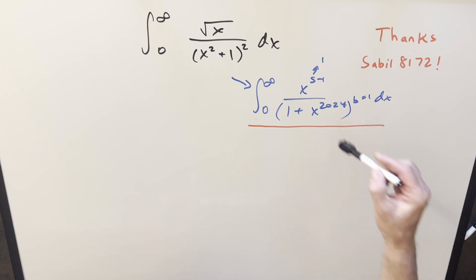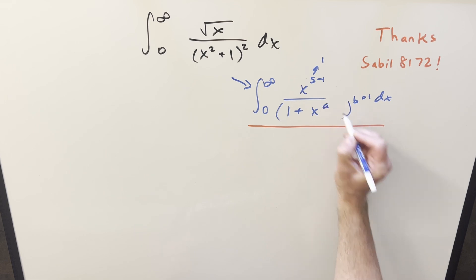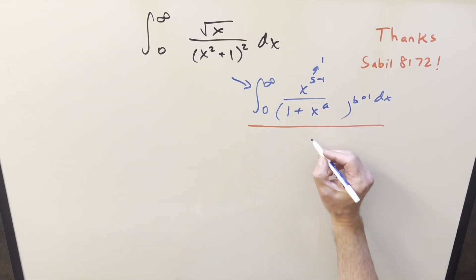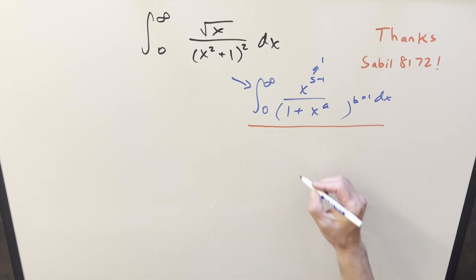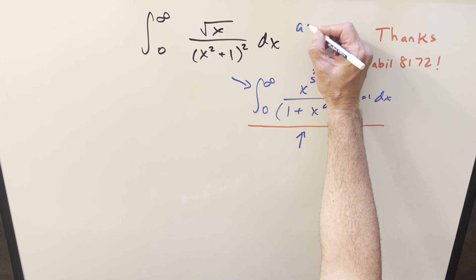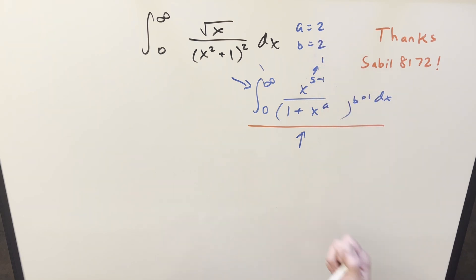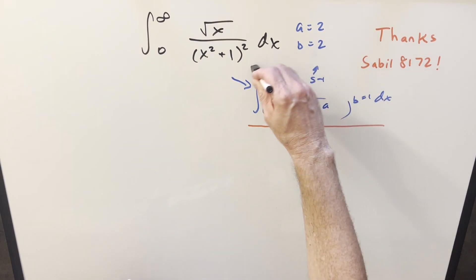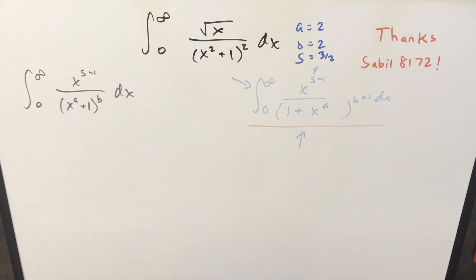The 2024 exponent doesn't really matter — let's just call it a. We want to derive the general formula, keeping in mind that the integral needs to converge. For our specific problem, a is going to be 2, b is also 2, and for the s value, s is going to be three halves.